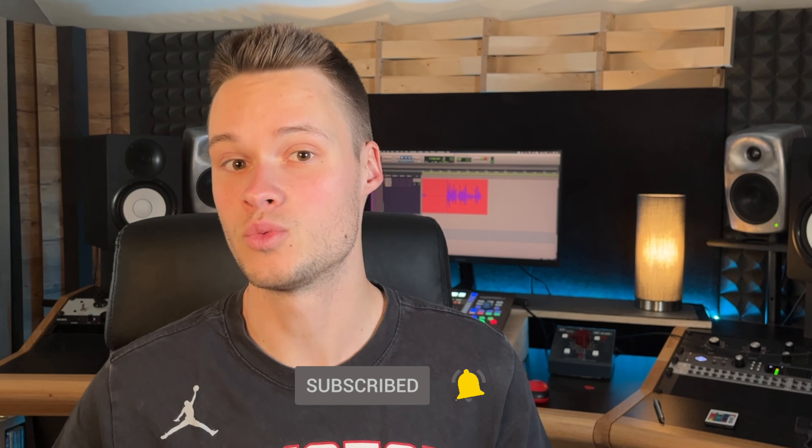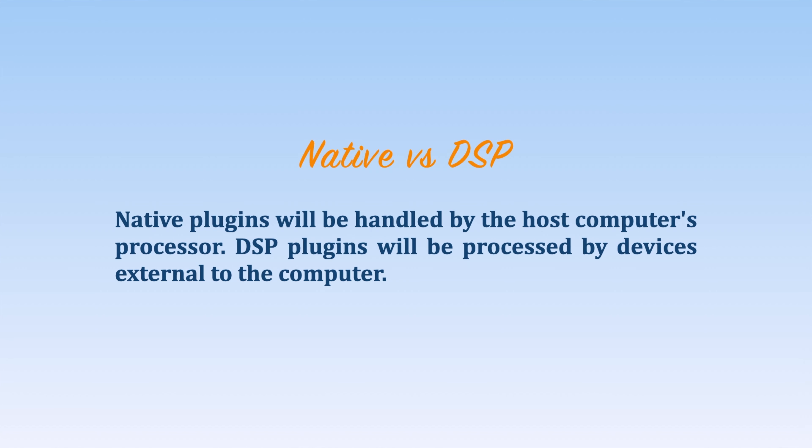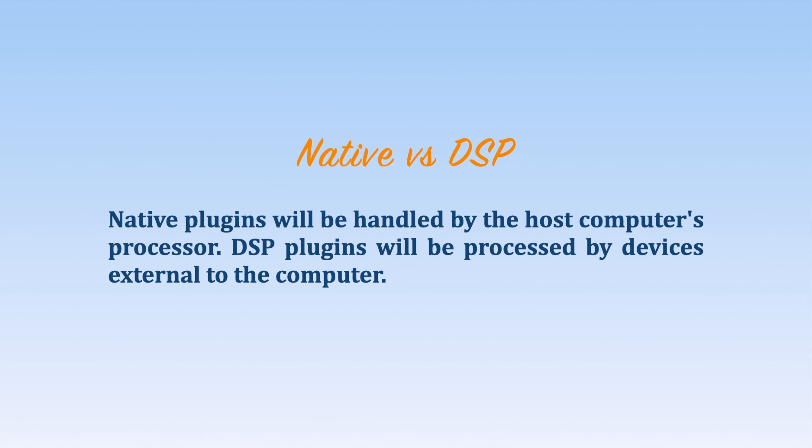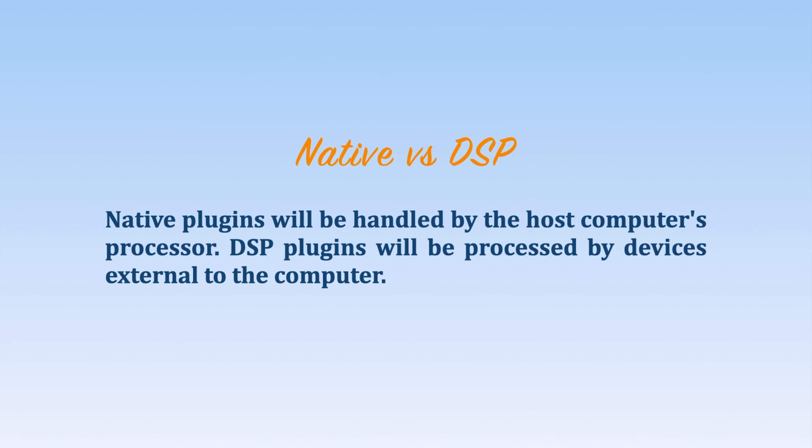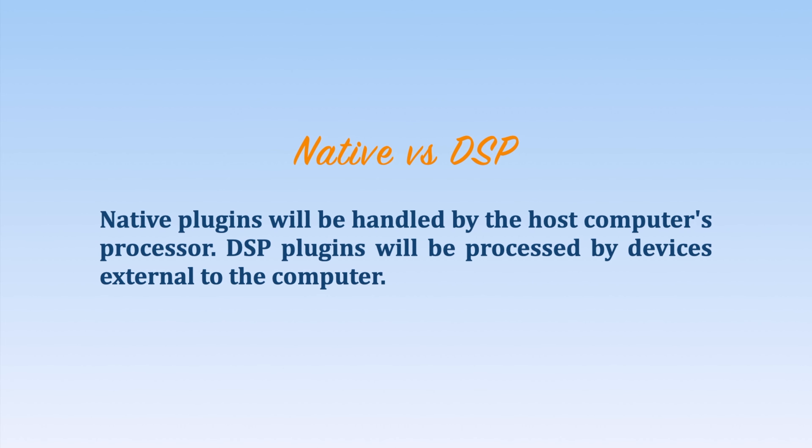Before I give you the answer, please make sure you hit the subscribe button so you're the first one to know every time I release new information about music production and music mixing. The difference between the two simply lies in where the processing takes place. Native plugins will be handled by the host computer's processor, while DSP plugins will be processed by devices external to the computer.